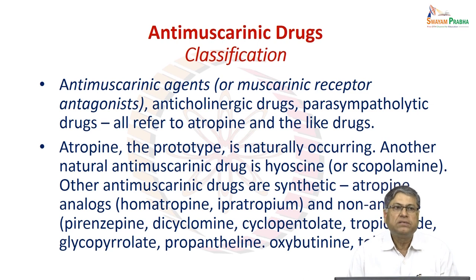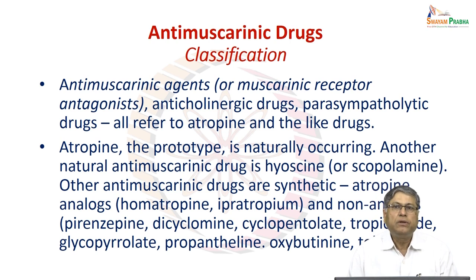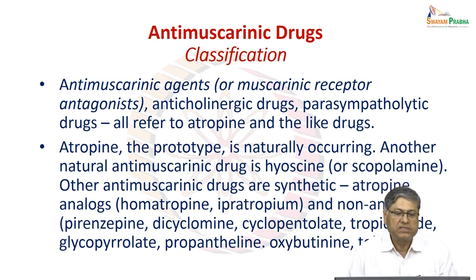These drugs may also be called parasympatholytic drugs, meaning they block the effects of acetylcholine through muscarinic receptors. When parasympathetic post-ganglionic nerves are stimulated, anti-parasympathetic drugs would produce effects opposite to those caused by stimulation of post-ganglionic parasympathetic nerves.